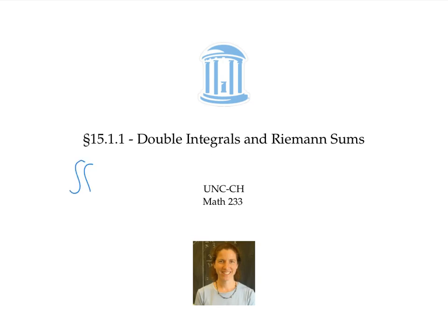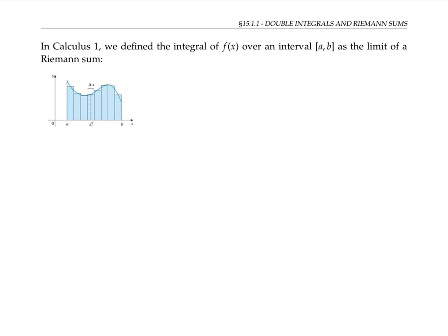This video defines integrals of functions of two variables as a limit of Riemann sums. In calculus one, we define the integral of a function of one variable over an interval AB as a limit of Riemann sums. We thought of the integral as representing the area under the function and above the x-axis between x equals a and x equals b.